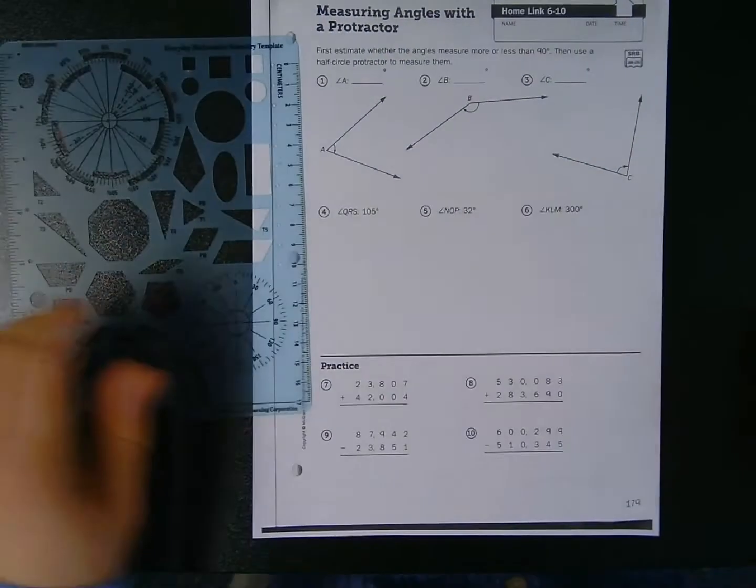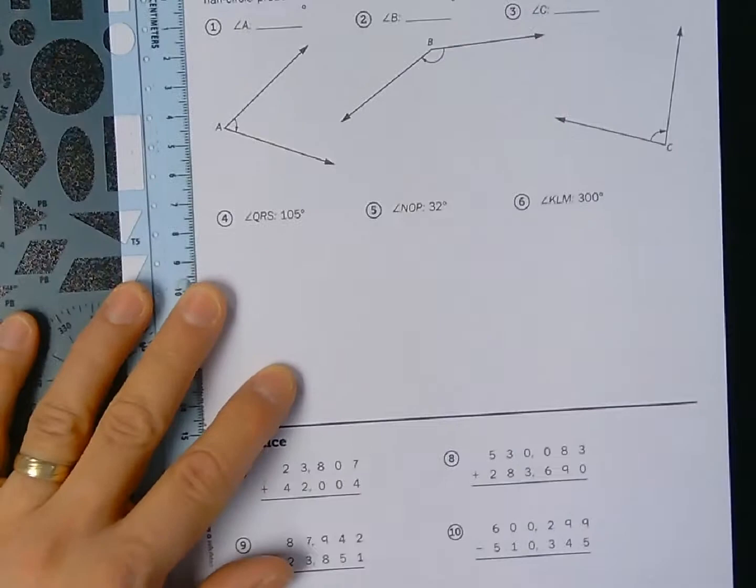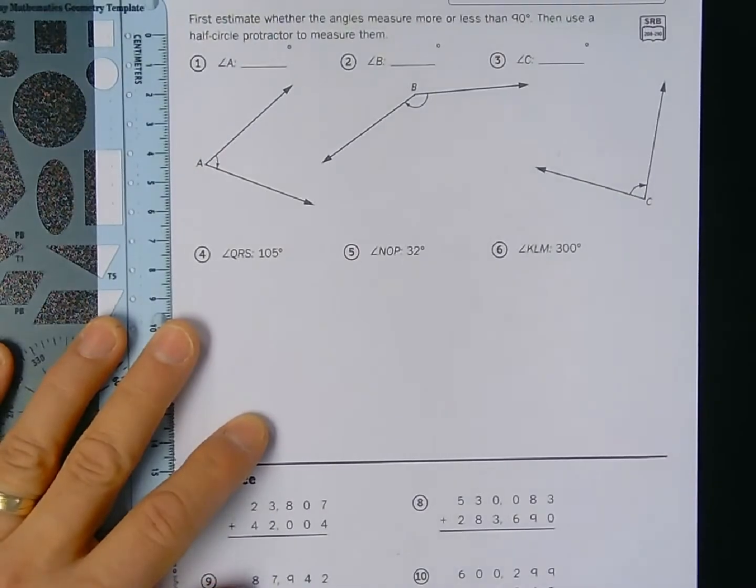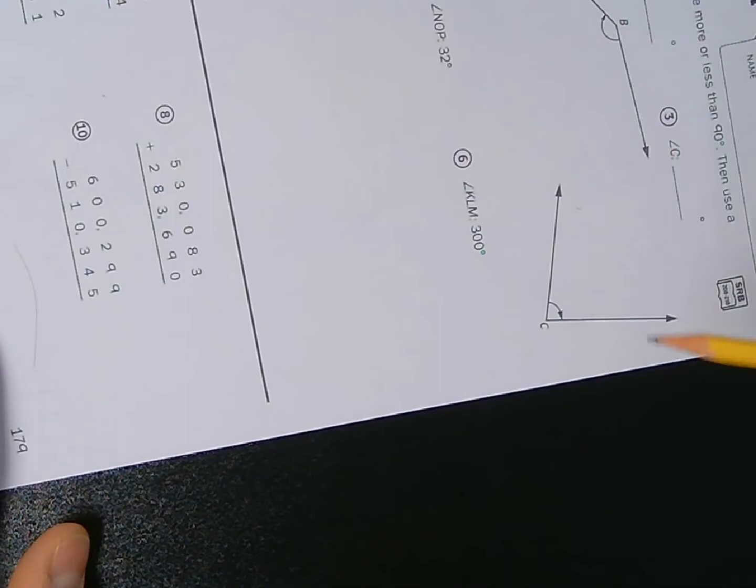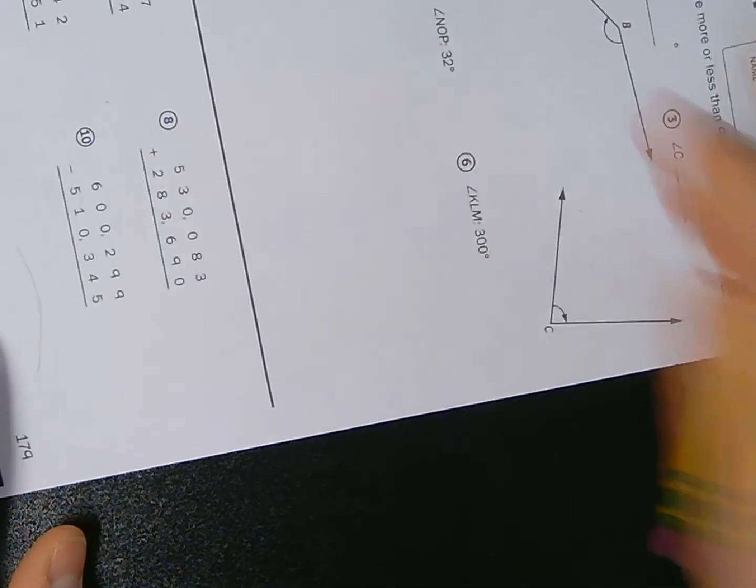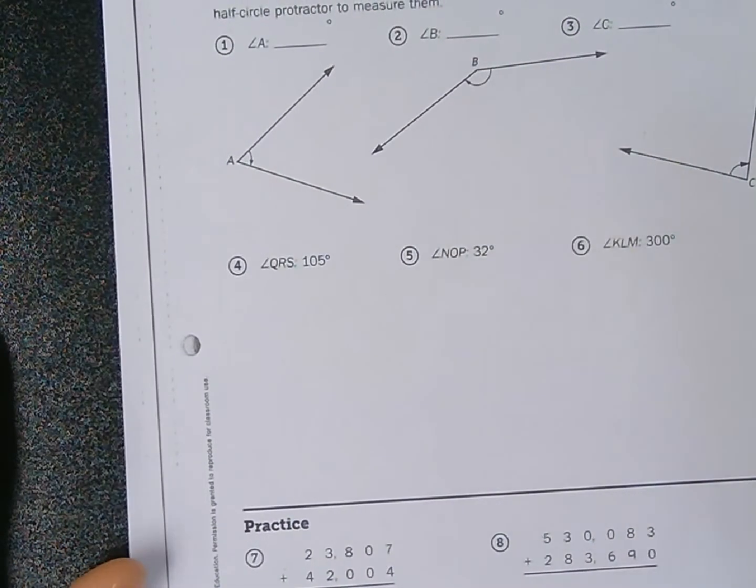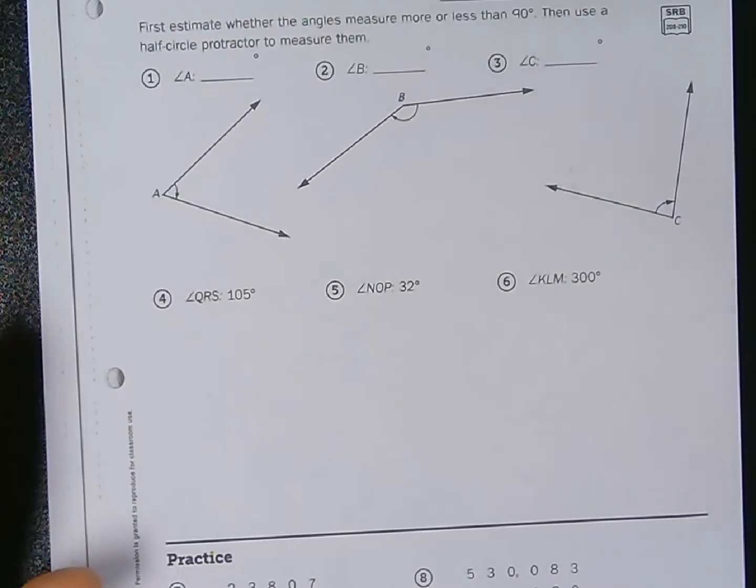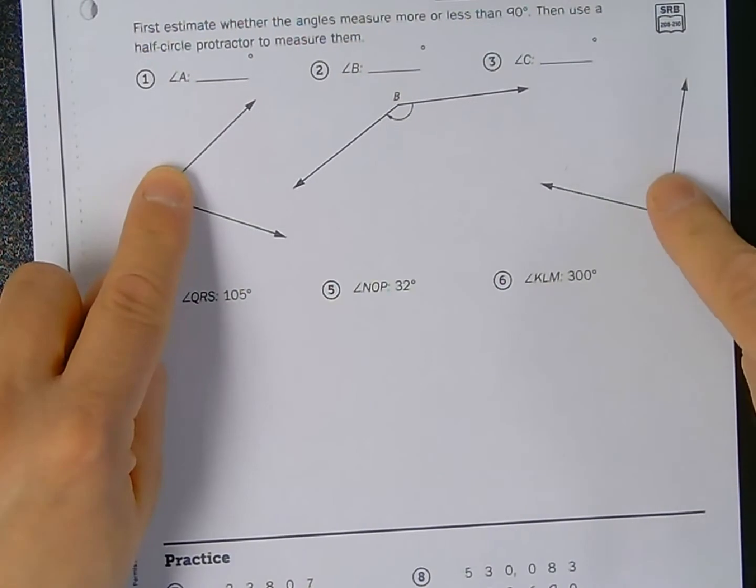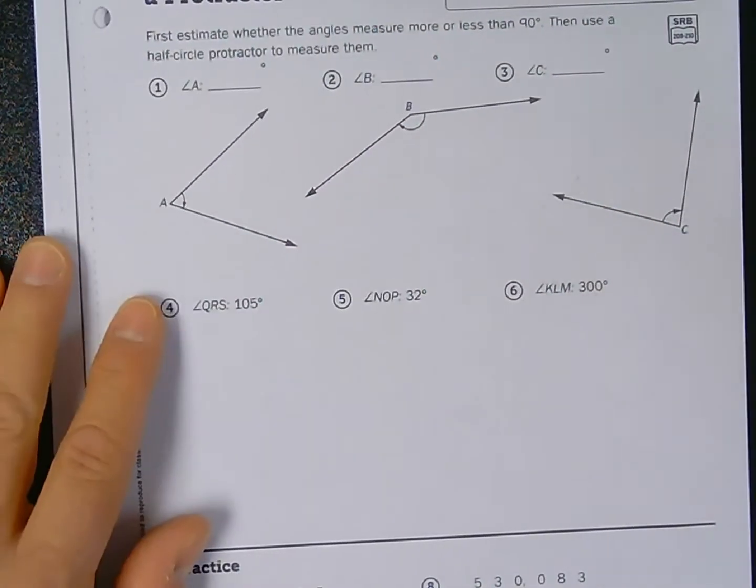So when I look at these three angles for numbers one, two, and three, one and three look to be less than 90 degrees. Number two, however, looks very much like an obtuse angle. So that's going to be more than 90 degrees. So when I make my measurements, I want to kind of keep in mind that one and three are going to be less than 90, and two is going to be more than 90.